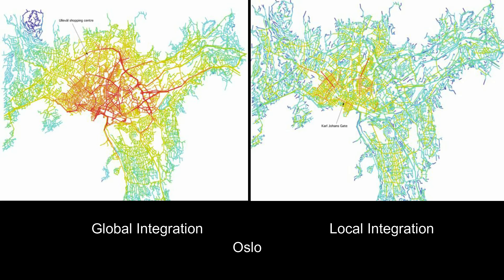The figure shows global and local integration analysis of Oslo. The most globally integrated axial lines are the outer ring road, followed by the middle ring road. Both ring roads serve vehicular movement. In particular, the outer ring road is a busy car-based road, and at every junction a car-based shopping mall is located. The local highly integrated streets are Oslo's most pedestrian-friendly and vital shopping streets, and these streets have mixed land use with individual small shops, cafes, and chain stores.